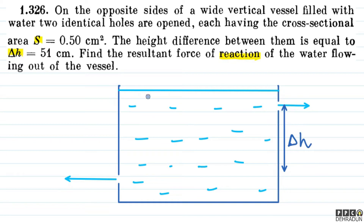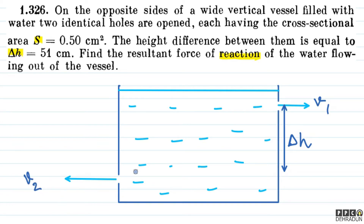So that hole will exert a force on the vessel towards the right. We can see that the speed will be greater at the bottom hole. The speed at the top hole I'm calling V1, and the speed at the bottom hole V2. Obviously V2 will be greater because there is more water above it. So the net force on the vessel will be greater because of the bottom hole, and that force will be towards the right.